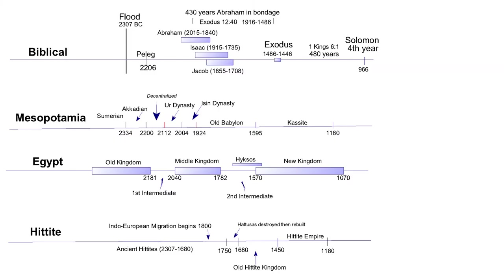In this chart we are examining the timelines of the Bible, Mesopotamia, Egypt and the Hittites. The Bible is a topic unto itself and will be discussed in detail in other videos. For this video we will stick to just the secular histories of Mesopotamia, Egypt and the Hittites.